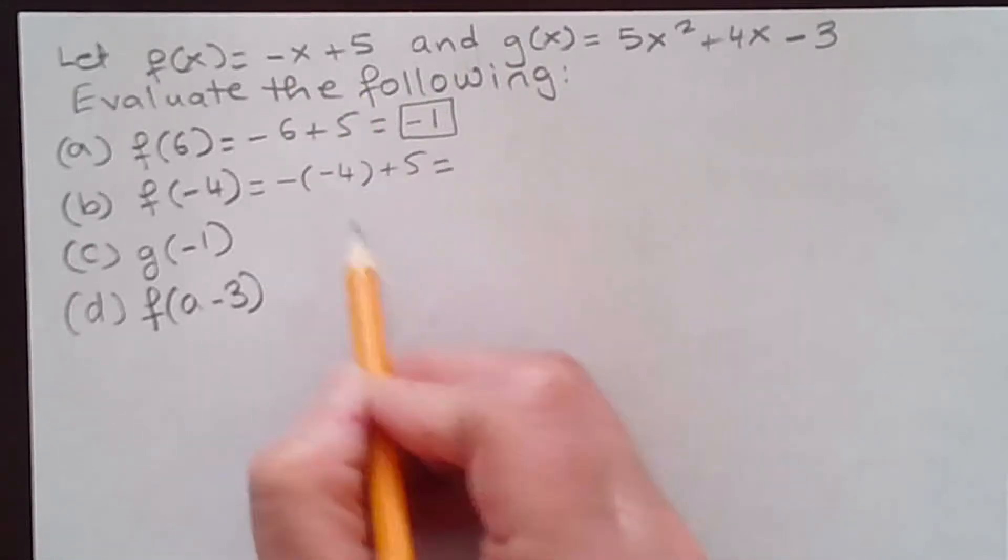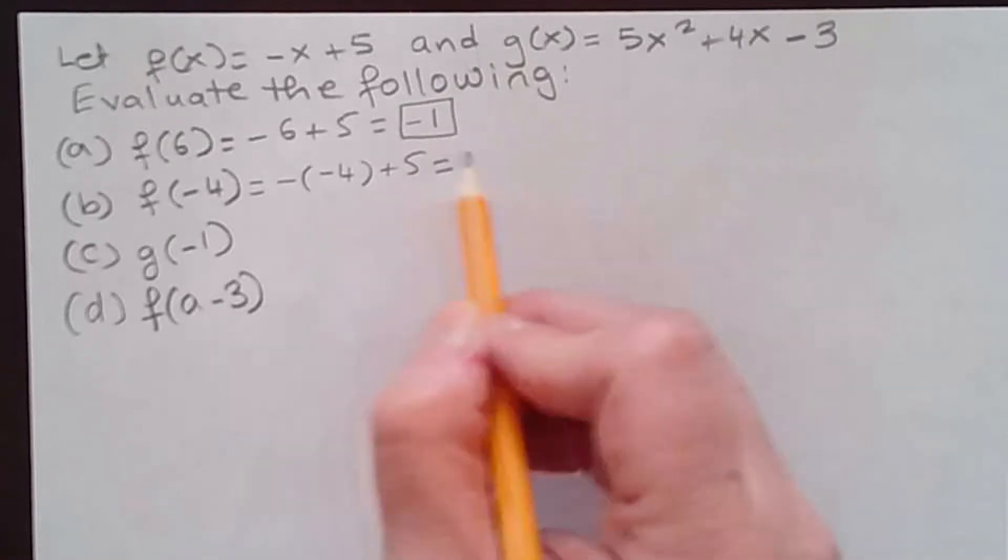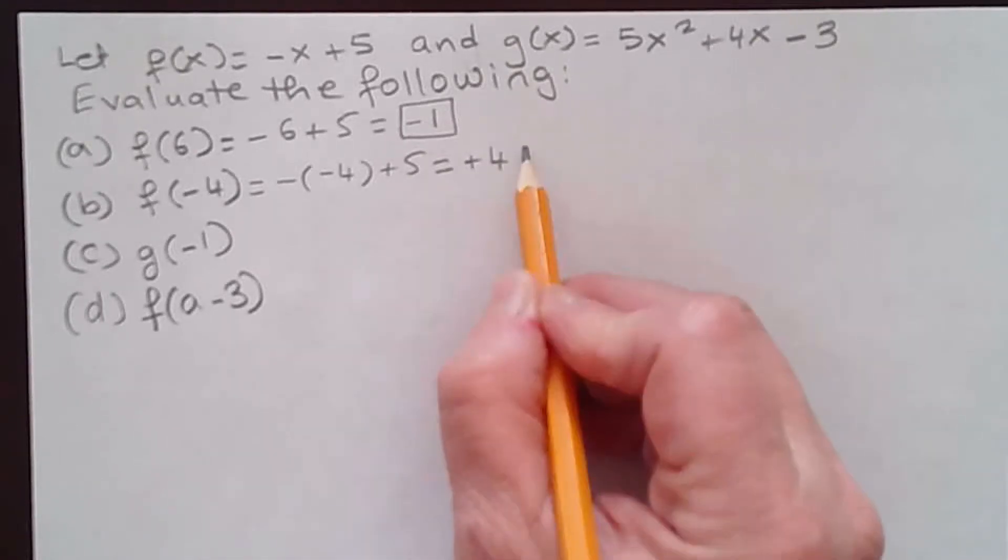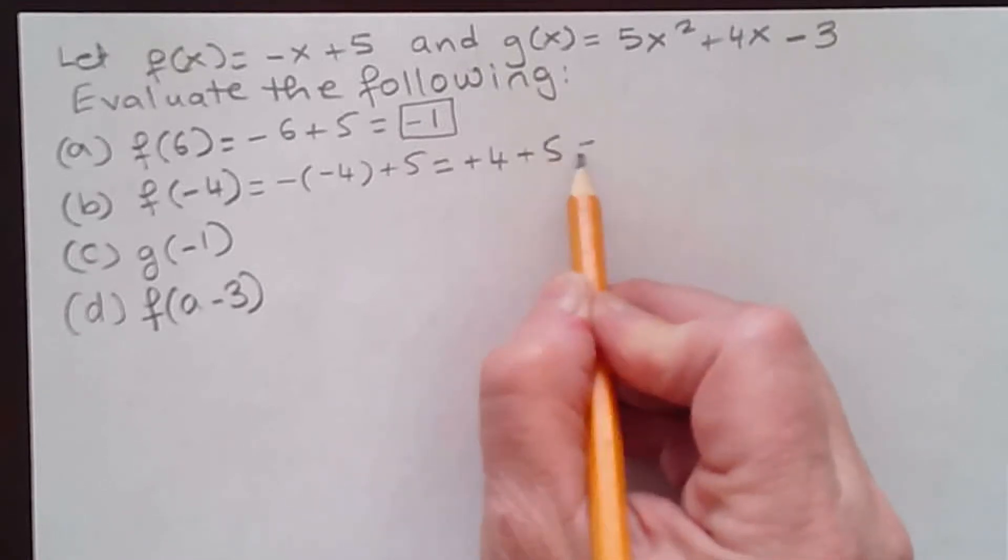That equals negative times negative, which is positive 4. You don't need to put plus; you could have just written 4. Then you have plus 5, so 4 + 5 = 9.